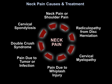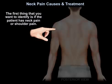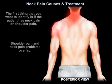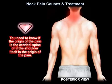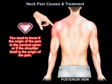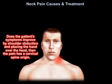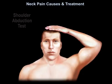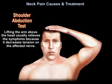The first thing you want to identify is whether the patient has neck pain or shoulder pain. You need to know if the origin of the pain is the cervical spine or if the shoulder itself is the origin. Does the patient's symptoms improve by shoulder abduction — placing the hand over the head? If so, the pain is of cervical spine origin. Lifting the arm above the head usually relieves the symptoms because it decreases tension on the affected nerve.